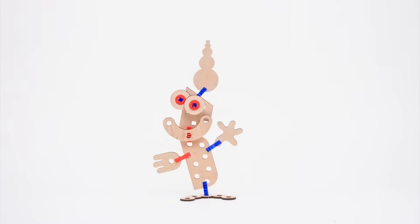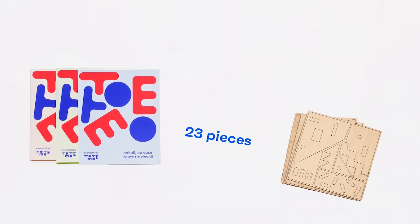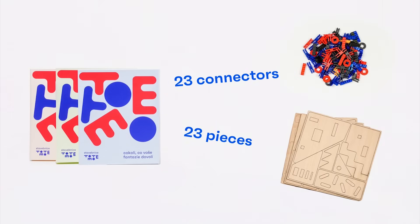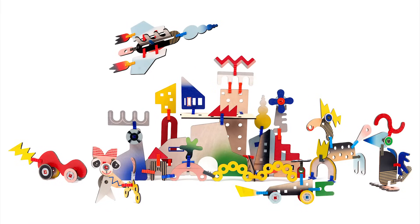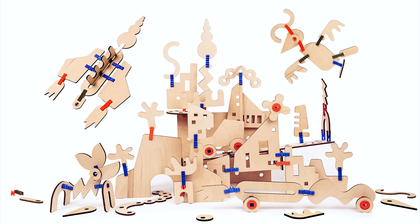You can choose from three basic sets, each including 23 pieces and 23 connectors. Our Totemo large set is made of 110 pieces and 120 connectors. Choose between a color version and a natural one that you can even paint yourself.